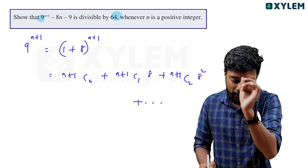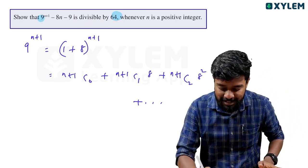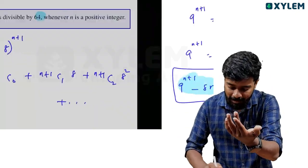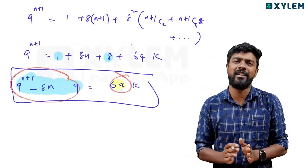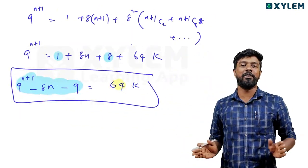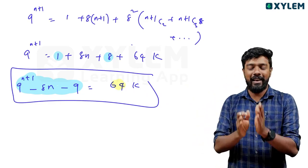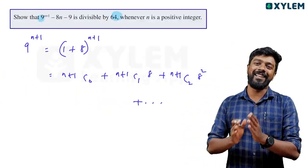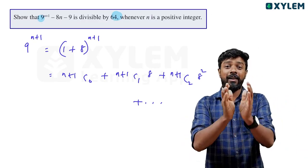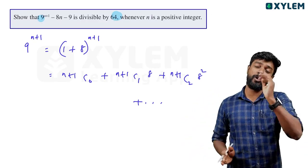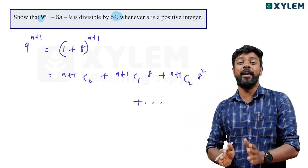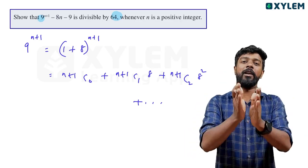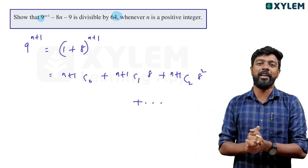So 9 raised to n plus 1, minus 8n minus 9, gives us this result. Thank you.